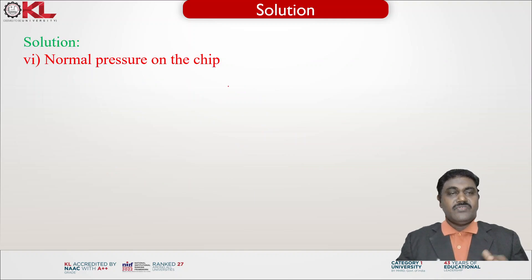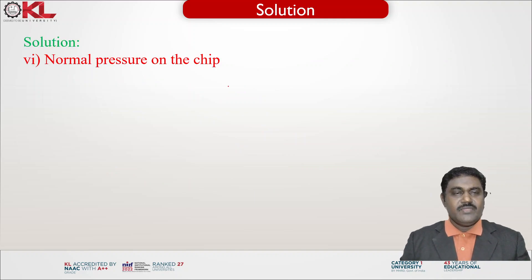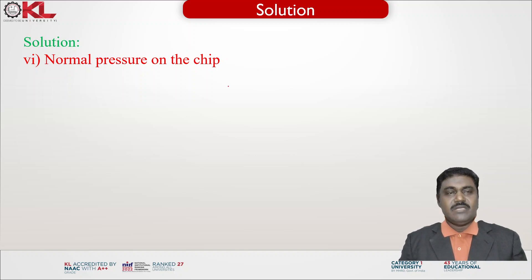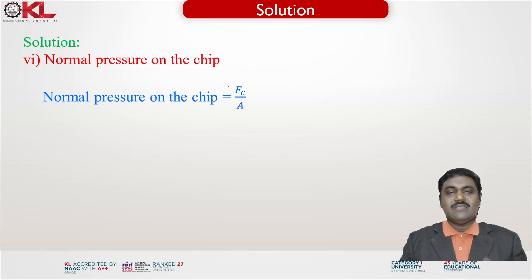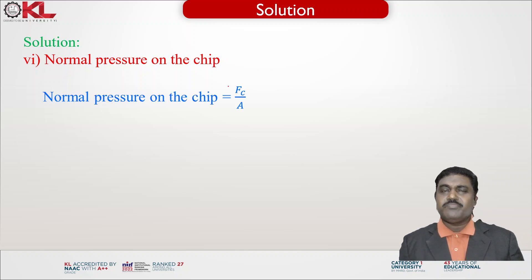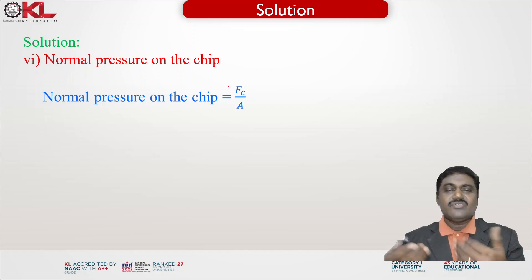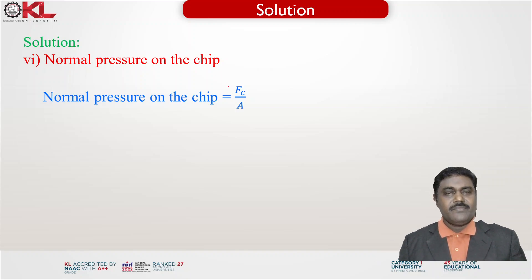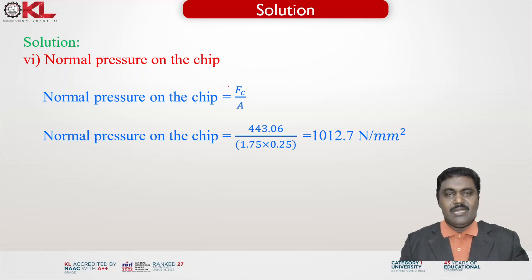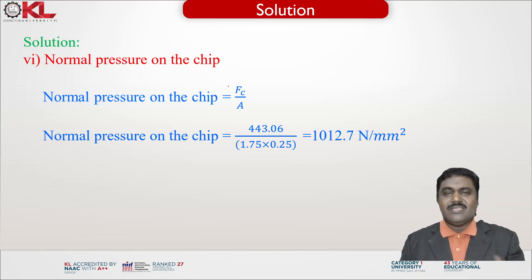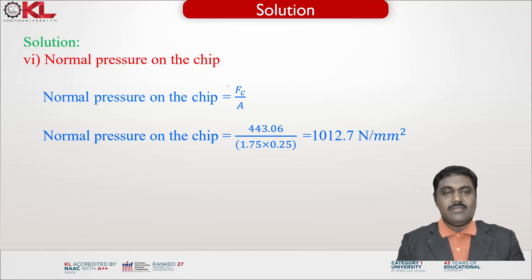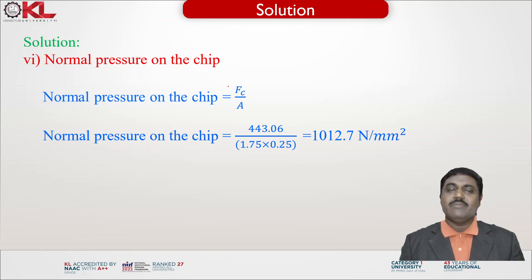For the seventh item, normal pressure on the chip: this is obtained by dividing the cutting force by the cross-sectional area, where the area equals width multiplied by thickness of the chip. With the cutting force and area known, the normal pressure on the chip is obtained as 1012.7 Newton per mm square.